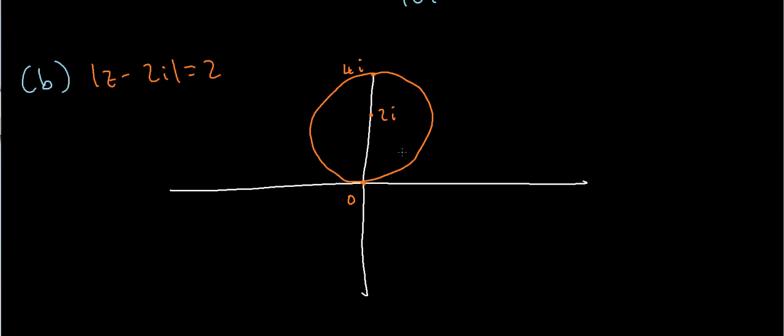So, do any poles lie inside this contour? Well, my poles were 2i and minus 2i. Certainly I've got a pole at 2i inside my contour. I've also got a pole at minus 2i. But this pole does not lie inside my contour, so the only pole that I care about is the pole at 2i.